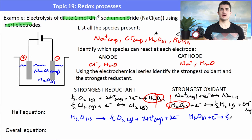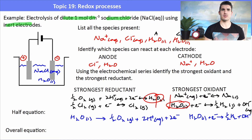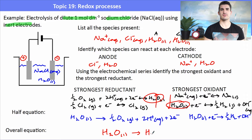Writing out the two half-equations, we combine them to write the overall equation by balancing four electrons and keeping terms on the correct side of the arrow. After cancelling, the overall equation is: H₂O (l) → H₂ (g) + ½O₂ (g).